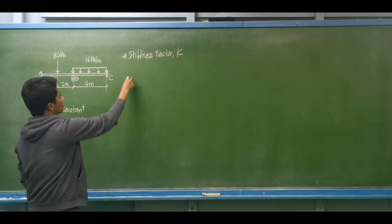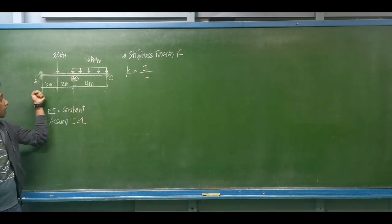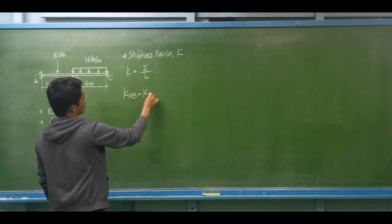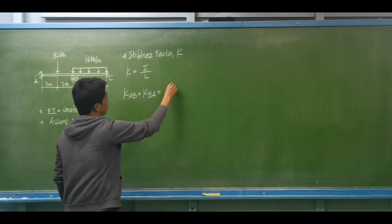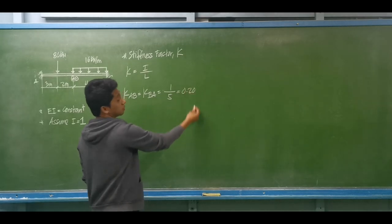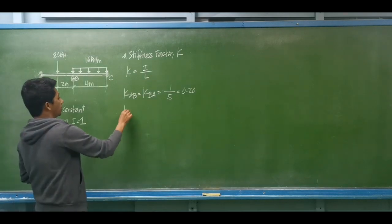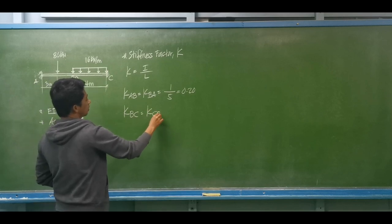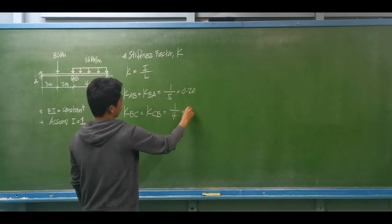The stiffness factor is equal to the moment of inertia divided by the length. For member AB, the stiffness factor equals one divided by 5 meters, which is 0.20. For span BC, the stiffness factor equals one over 4 meters, which is 0.25.